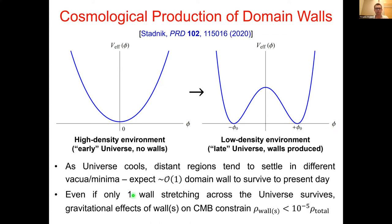Nevertheless, even if only a single such wall survives to the present day, stretching across the observable universe, its gravitational effects would be very profound. In particular, measurements pertaining to the cosmic microwave background radiation constrain the total energy in such a wall to about one part in 100,000 of the total energy budget of the universe.